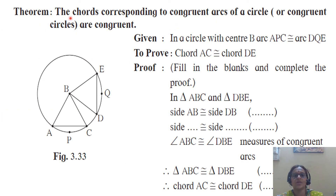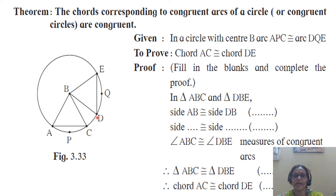Let us study the theorem. The chords corresponding to congruent arcs of a circle or congruent circles are congruent. What is given to you? Circle with center B, arc APC congruent to arc DQE — these two arcs are congruent. You have to prove chord AC is congruent to chord DE. Now, fill in the blanks and complete the proof. Consider triangle ABC and triangle DBE, in which side AB is congruent to side DB.